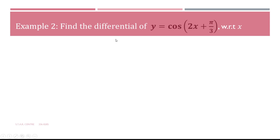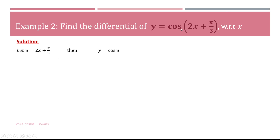Example 2: find the differential of y equals cos(2x + π/3) with respect to x. Note that π/3 is a constant — there is no variable next to it. Our first step using the chain rule is to make a substitution. We let the entire bracket equal u, so if u equals 2x + π/3, then y becomes y equals cos u.